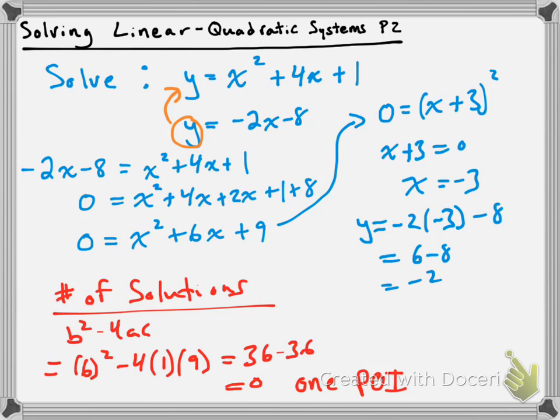So x equals negative 3 and y equals negative 2, which tells us the point of intersection is at negative 3, negative 2. Take care, guys.